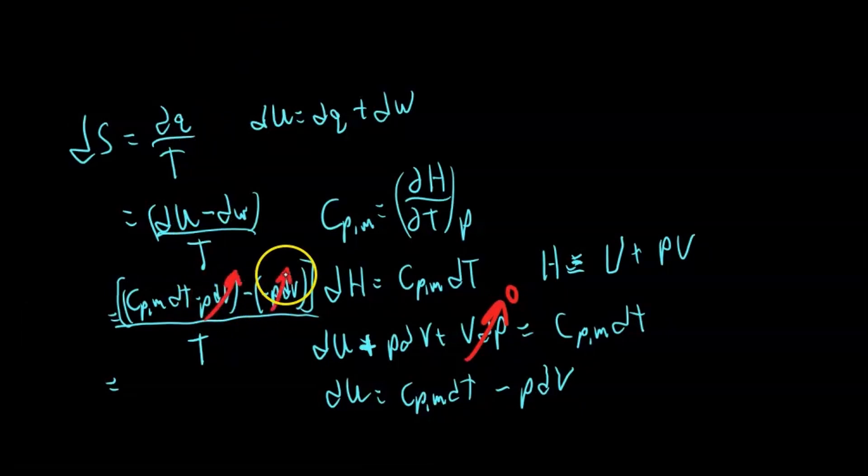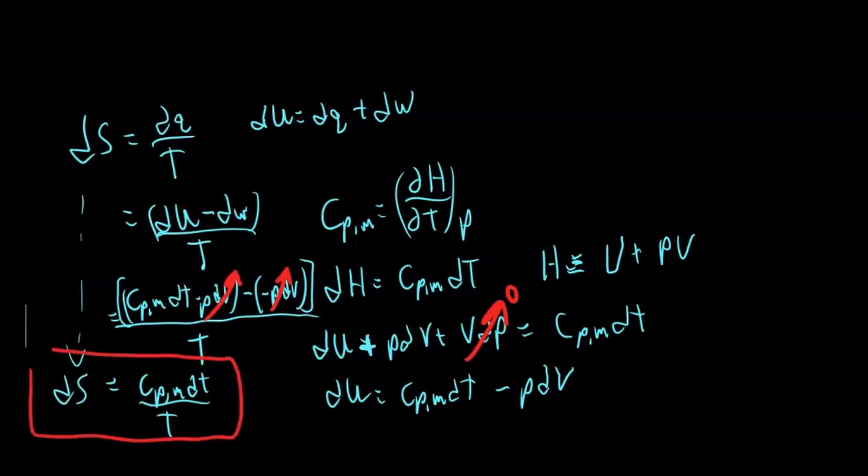We're left with Cp,m dT over T. So ds is equal to the heat capacity dT over T.